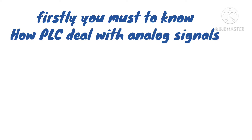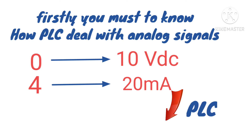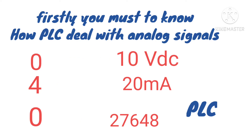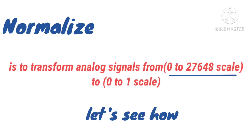If you have an analog signal, if it is from 0 to 10 volt or it is from 4 to 20 milliampere, the PLC will turn it to these numbers.